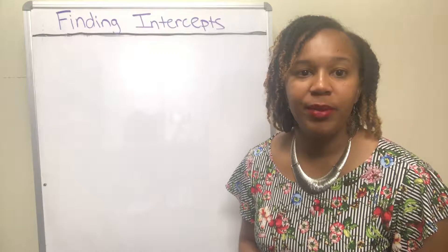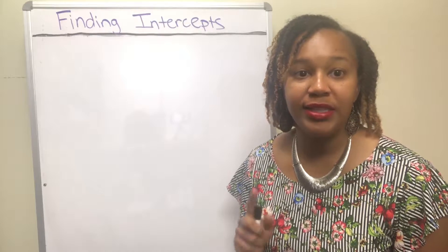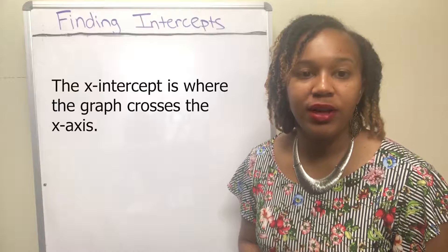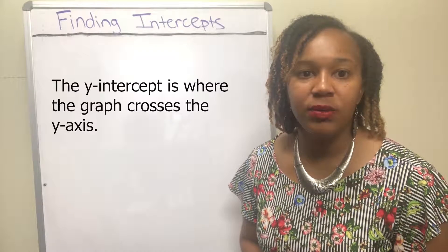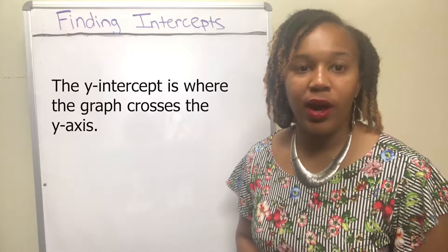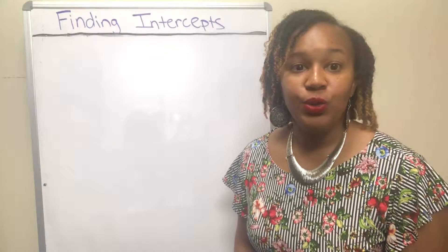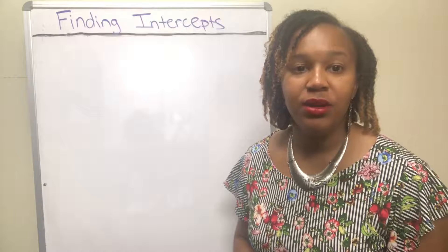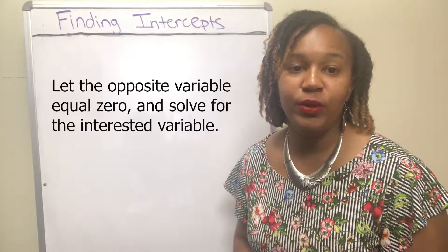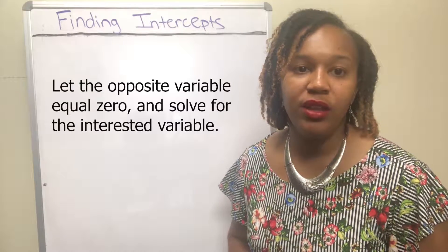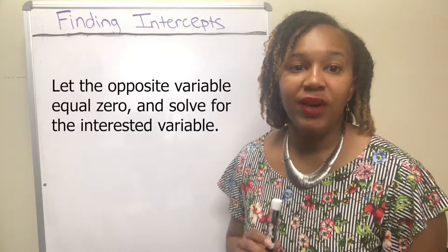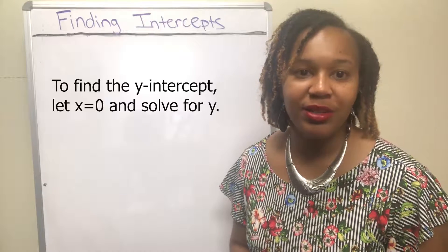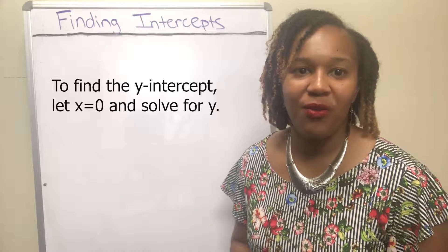In this video we're going to be talking about how to find the intercepts — that is the x and the y intercepts. The x intercept is where the graph crosses the x axis, and the y intercept is where the graph crosses the y axis. Whenever you want to find an intercept, you let the opposite variable equal zero and solve for the interested variable. So when you want to find the x intercept, you let y equal zero and solve for x. When you want to find the y intercept, you let x equal zero and solve for y.